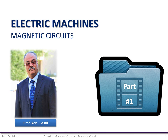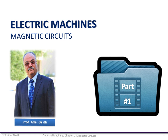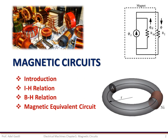My name is Adel Gasly. I'm going to present to you part 1 of the chapter about magnetic circuits. In this part, I will make a brief introduction and then present the IH and BH relations, which are the relations between the electric current I and the magnetic field intensity H, and between the magnetic flux density and the magnetic field intensity H. Finally, we'll see how we can get a magnetic equivalent circuit.